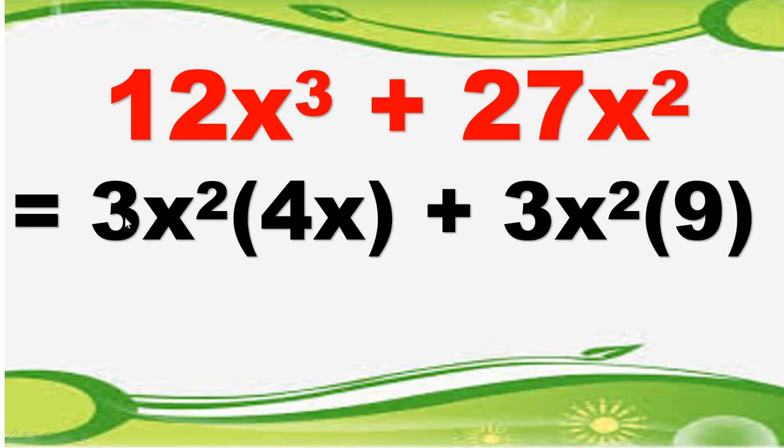So 12 divided by 3 is equal to 4. x cubed divided by x squared is equal to x. Remember the quotient rule? When you are going to divide expressions with the same basis, you simply subtract their exponent. So 3 minus 2, we have here 1. So 4 times x is equal to 4x. Next, 27 divided by 3 is 9. Then x squared divided by x squared is equal to 1. 9 times 1 is 9.